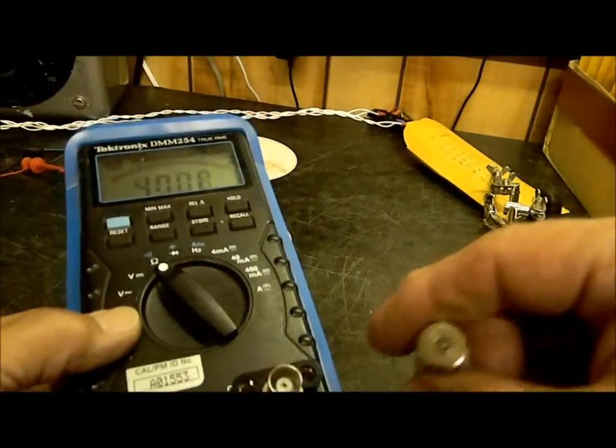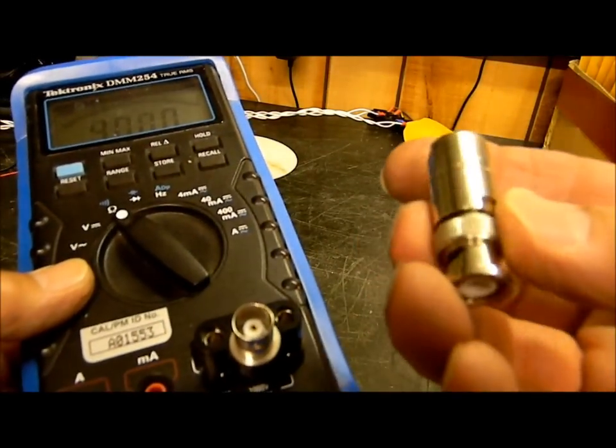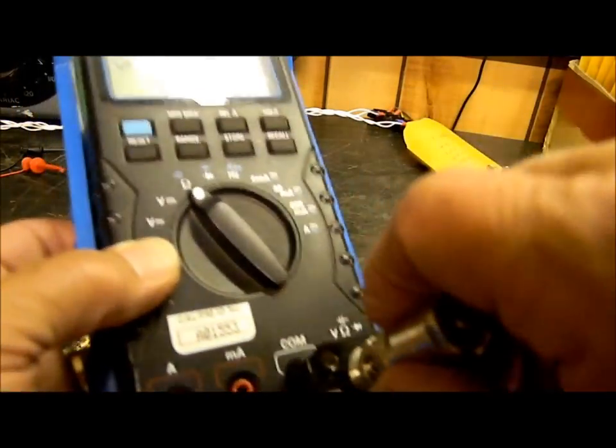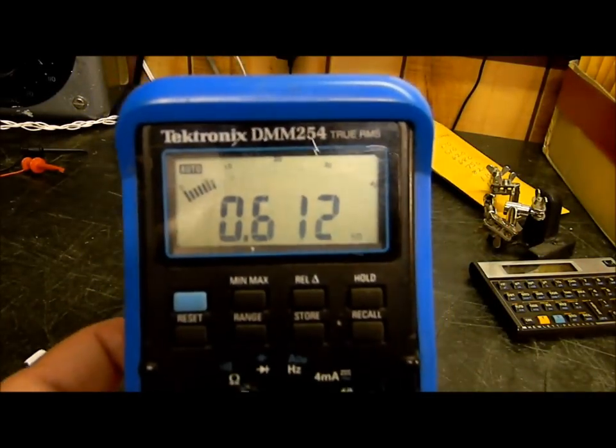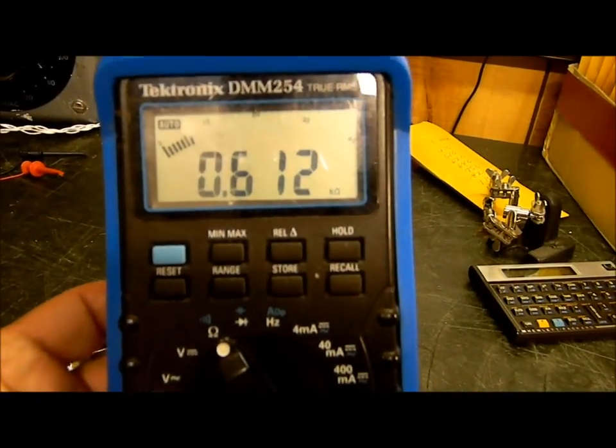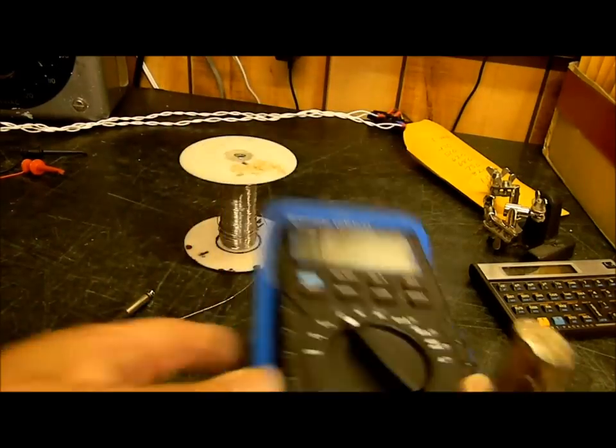Okay, we've completed our project here. We have our 600 ohm resistor in there and we snap it on to our fancy meter and we have 612 ohms.